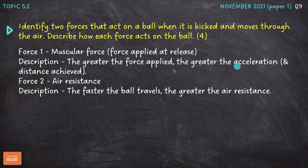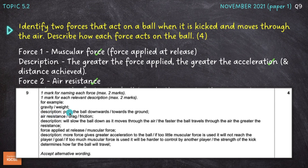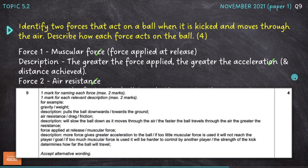The second force is air resistance. How does this act on the ball as it moves through the air? The faster the ball travels, the greater the level of air resistance — four marks awarded there. Looking at the mark scheme, we could have gone for gravity or weight: gravity pulls the ball downwards towards the ground. Air resistance will slow the ball down as it moves through the air. There are also multiple points we could have included about muscular force, so pause the video and have a look for a broader understanding.